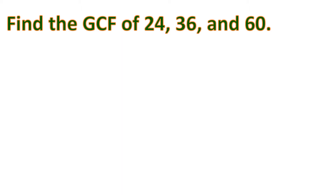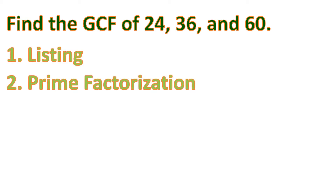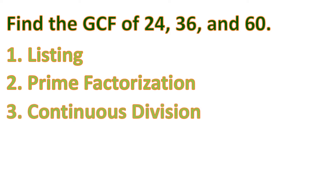So how do we find the greatest common factor? By its name, greatest common factor, that means we find the set of factors of 24, 36, and 60, find the common ones, and then find the greatest among those common factors. There are three methods to find the GCF: listing, prime factorization, or continuous division. Either of these three can let you find the GCF.